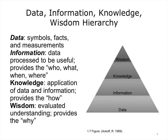Information provides the answers to who, what, when, and where. When information is given meaning by interpreting it, information becomes knowledge. Knowledge answers the how questions. Finally, wisdom, at the very top of the pyramid, answers the why questions.